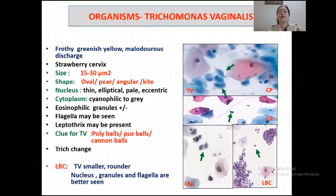The first organism is Trichomonas vaginalis. It is one of the most common curable sexually transmitted diseases, usually seen in young females but can also occur in males, leading to urethritis or prostatitis. Though males are usually asymptomatic, females usually present with frothy greenish-yellow, strongly malodorous discharge associated with intense itching.